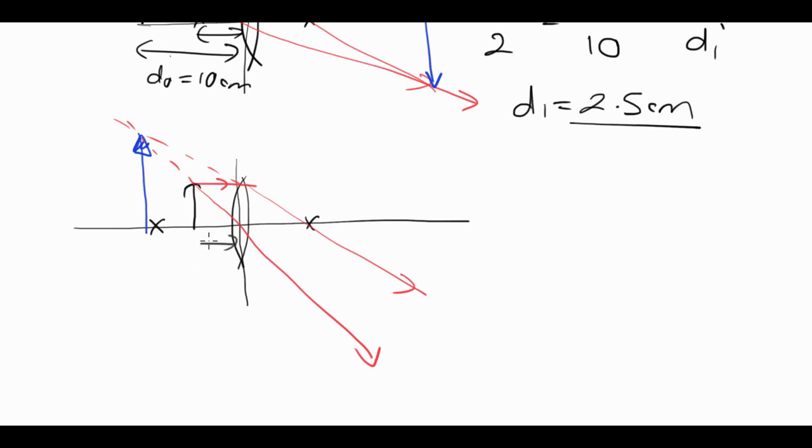So let's say we're told that do is equal to 2 centimeters and the focal length this time is equal to 10 centimeters. We know that the formula we want to use is 1 over f equals 1 over do plus 1 over di.